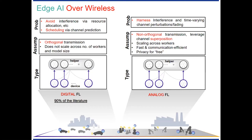Obviously, this will not scale very well with the number of workers. We can also look at scheduling of clients via channel prediction or model prediction. In contrast, on the right-hand side, this is analog federated learning. Again for a parameter server, the idea is that instead of avoiding interference, we harness it in order to transmit the model of all clients within one resource block — referred to as non-orthogonal transmission. This scales very well across number of workers, and in fact the performance improves as you increase the number of workers. This provides a fast and communication-efficient model training approach, and could even provide privacy for free.